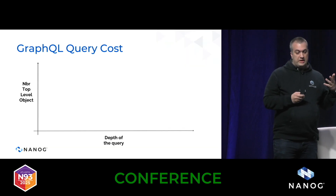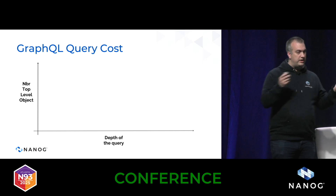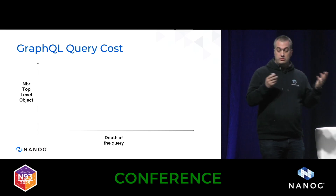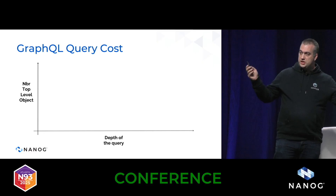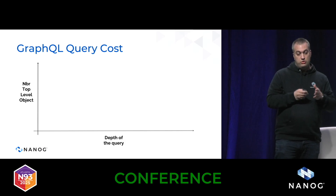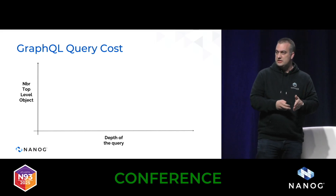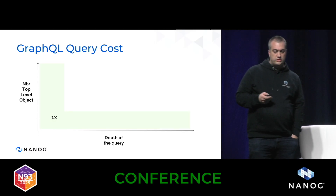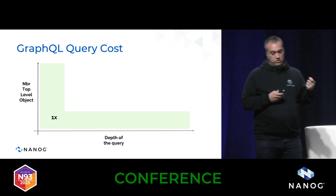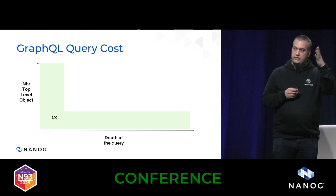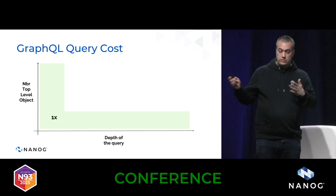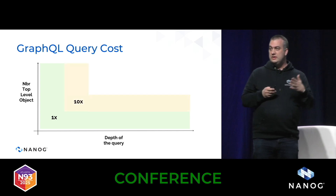One important thing to keep in mind with GraphQL is the cost of a query. You have full access to the underlying database and technically can write any query — you can query a lot of objects with very little data per object, like just the name of a device, or you can query one object with many sub-objects, like a device with all its interfaces and all its IP addresses. This is the notion of query depth and the number of top-level objects. As you start querying on both dimensions simultaneously, you're essentially asking for the entire content of the database in one query.